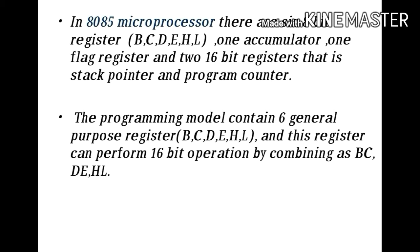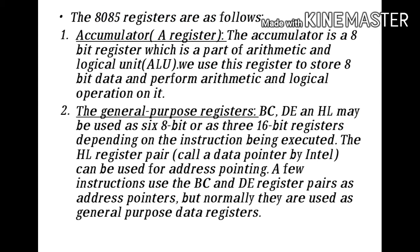The programming model contains six general purpose registers B, C, D, E, H, and L. These registers can perform 16-bit operations by combining as register pairs BC, DE, and HL. Now we will actually start with the study of registers in 8085.